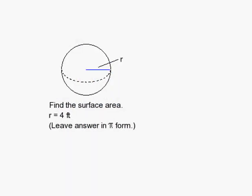How to find the surface area of a sphere. The hardest part is remembering the equation, and that equation is 4 times pi times the radius squared. Once you can remember that, it's just simple substitution.